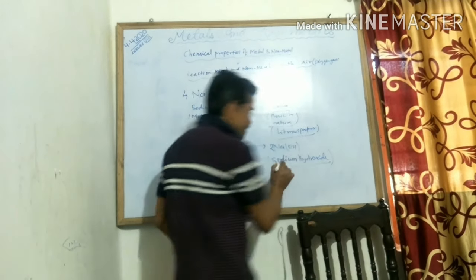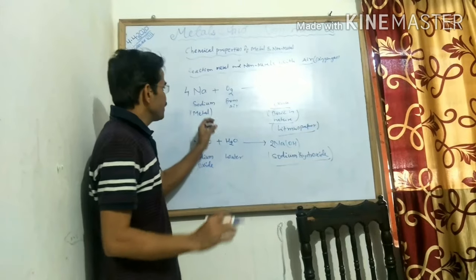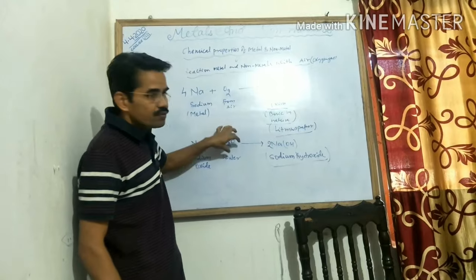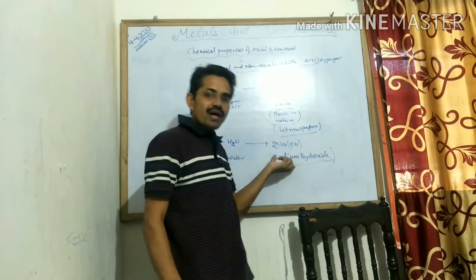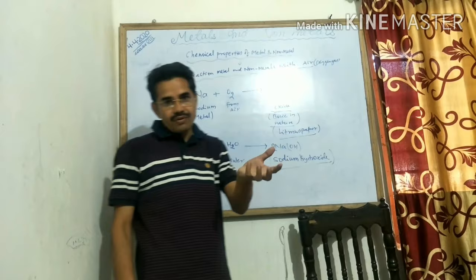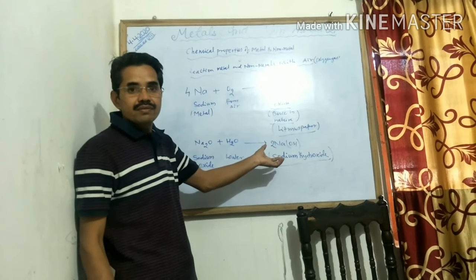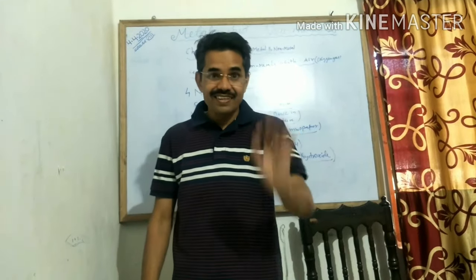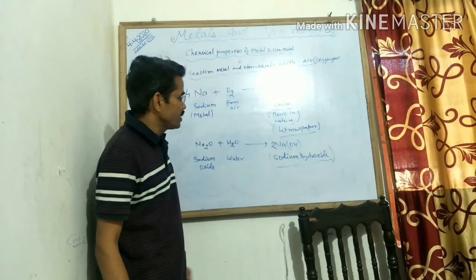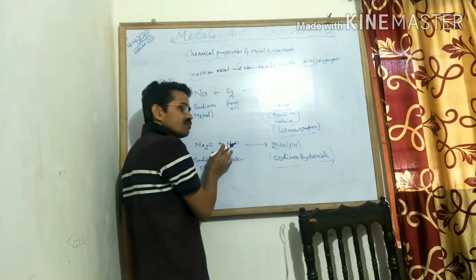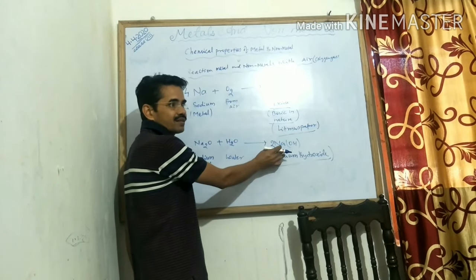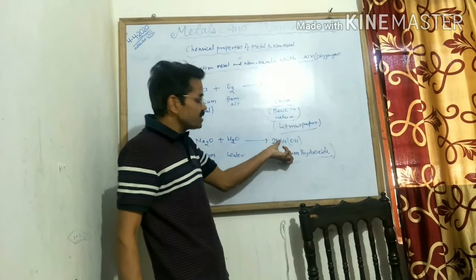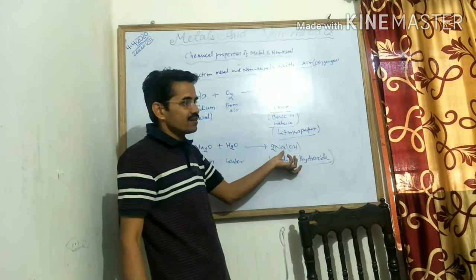So this is another basic concept: whenever a metallic oxide is formed and dissolved in water, it forms a hydroxide. However, only a few oxides dissolve in water. The oxides which are soluble in water are known as alkali.